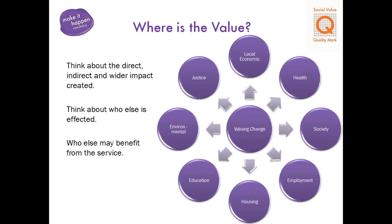This is basically the JSNA — Joint Strategic Needs Assessment — which is what makes up a community. Each of these areas also has a budget attached. So if you are being commissioned or supported by health, you can also go and speak to housing about a very similar issue and get joint commissioning, joint funding and joint support. If you can demonstrate your value more broadly, then that's achievable.